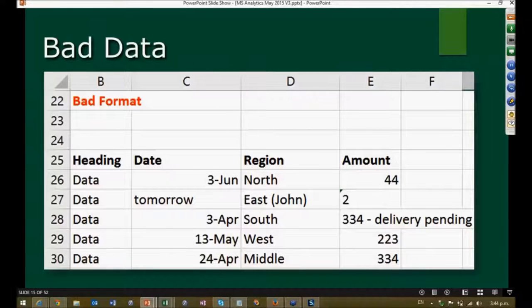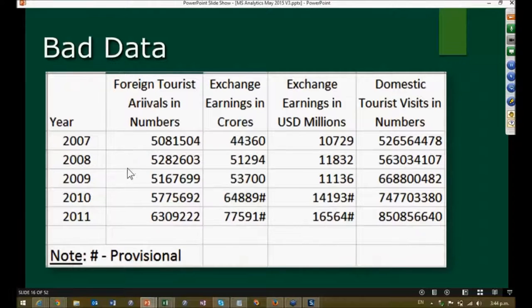Another example I recently found is from a government site, data.gov.in, which gives you government-related data. It's simple tabular data, most of it is good, but there's a hash sign there. That hash indicates it is provisional. Now if you want to indicate something is provisional, do not put that as part of the base cell itself.